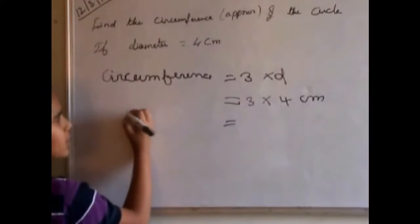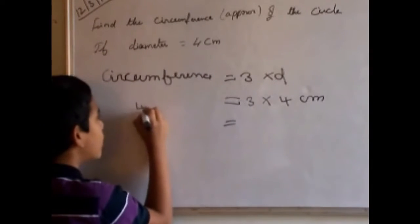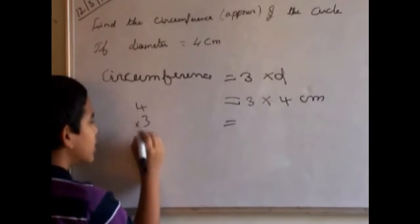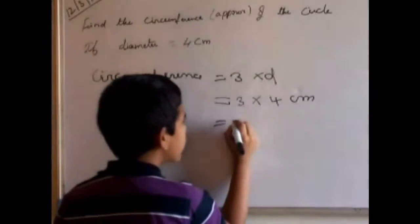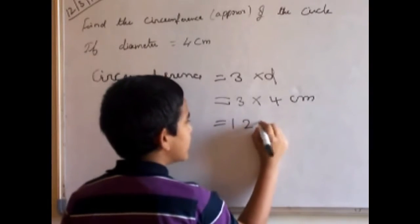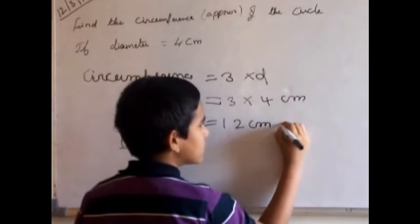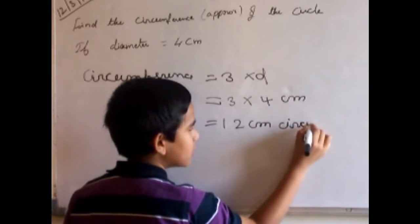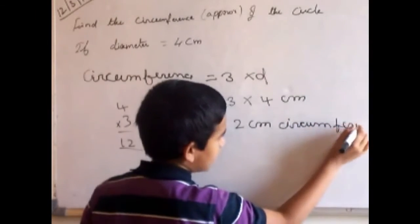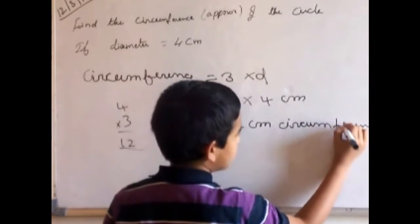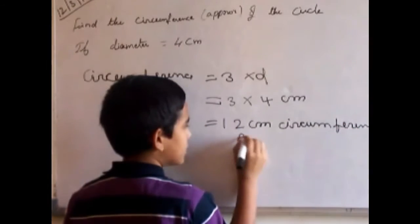So we should multiply. 3 times 4 is 12. So 12 cm is the circumference answer.